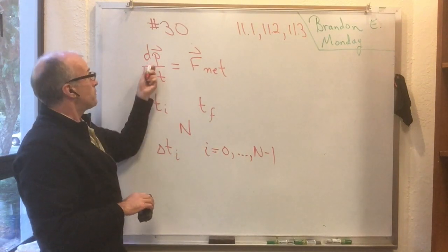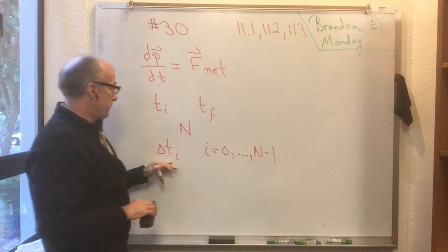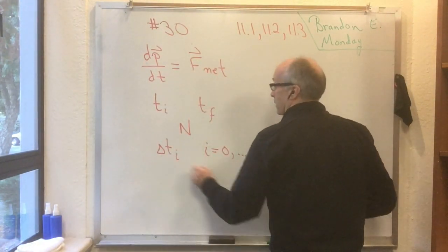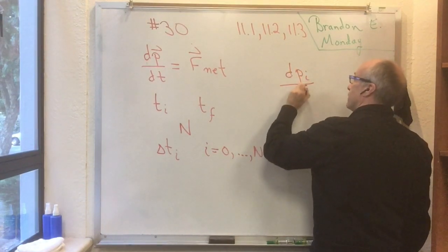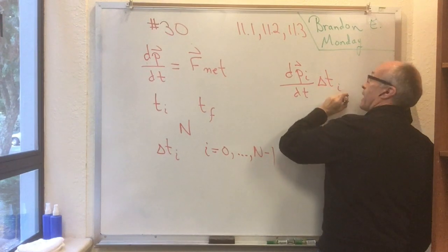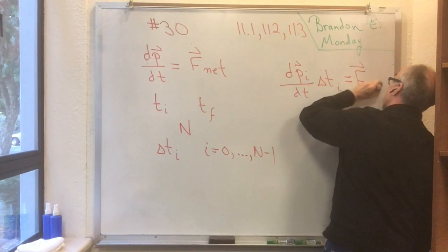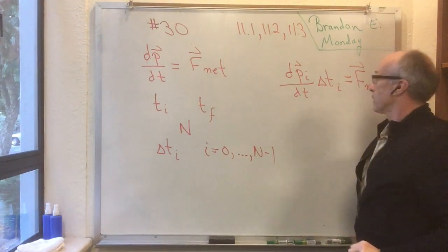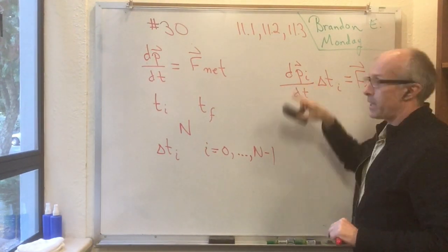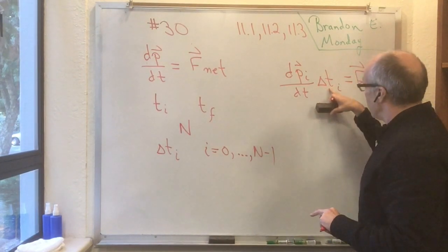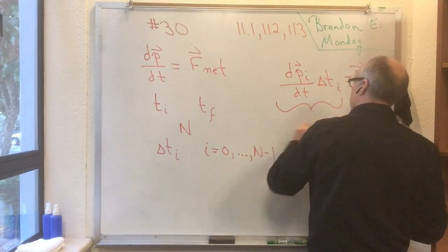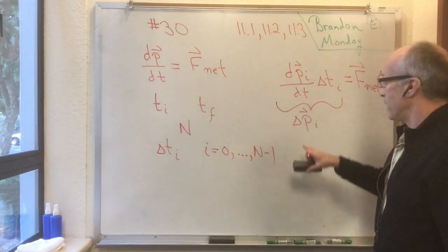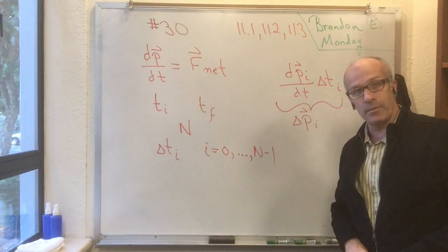Okay, so now let's multiply both sides of this equation at time t sub i by delta t sub i. Okay, so now we have dp_i/dt times delta t sub i is equal to F_net times delta t sub i. Now the time rate of change of p multiplied by a little bit of time is just a little change in p.